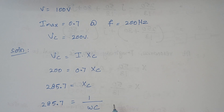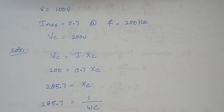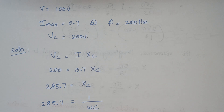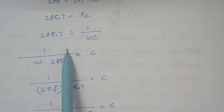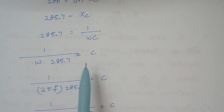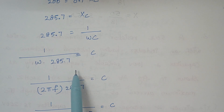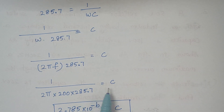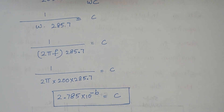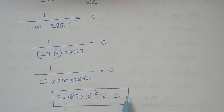To find the value of C, we use Xc = 1/(omega times C). Rearranging gives C = 1/(omega times 285.7). Since omega = 2 pi F and F = 200 Hz, substituting these values we can calculate the value of capacitance.